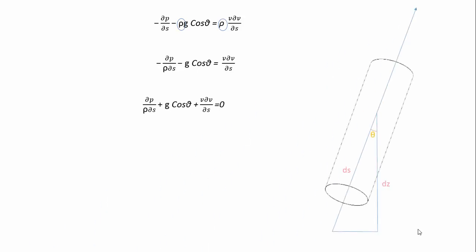As these sides are dS and dZ, by trigonometry, cos θ is equal to dZ by dS.